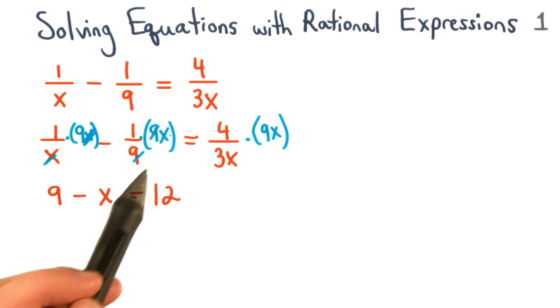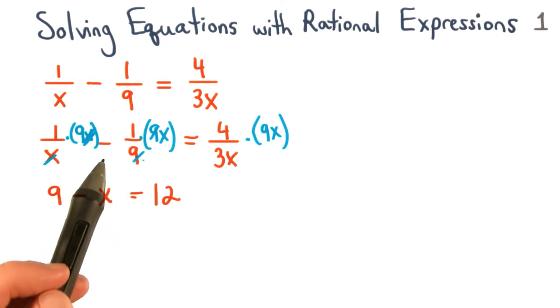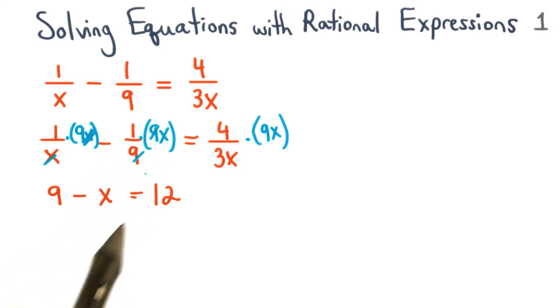For our second fraction, the factors of 9 cancel to 1, leaving us with negative 1 times x, or negative x.